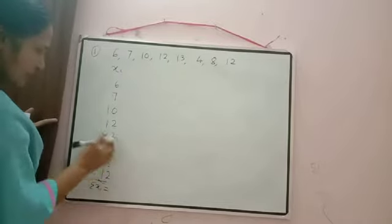Leave some space because we have to calculate the deviation. Now, x̄ = Σxᵢ / n = 72 / 8. Counting observations: 1, 2, 3, 4, 5, 6, 7, 8 — so divided by 8. We can cancel: 72/8 = 9. So x̄ = 9. At present we have calculated the mean only.